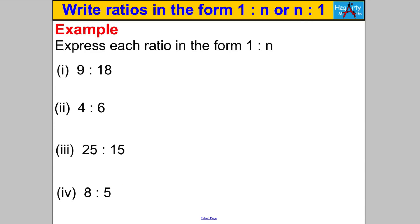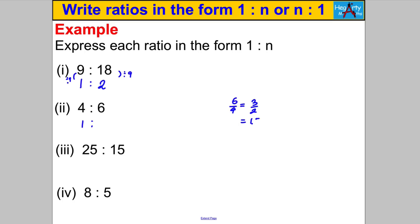Let's build that skill. Express each ratio in the form 1 to n. For 9:18 — divide both sides by 9, giving 1 to 2. For 4:6 — divide both sides by 4. We need 6 divided by 4, which simplifies to 3/2, and 3 divided by 2 is 1.5. So the answer is 1 to 1.5.